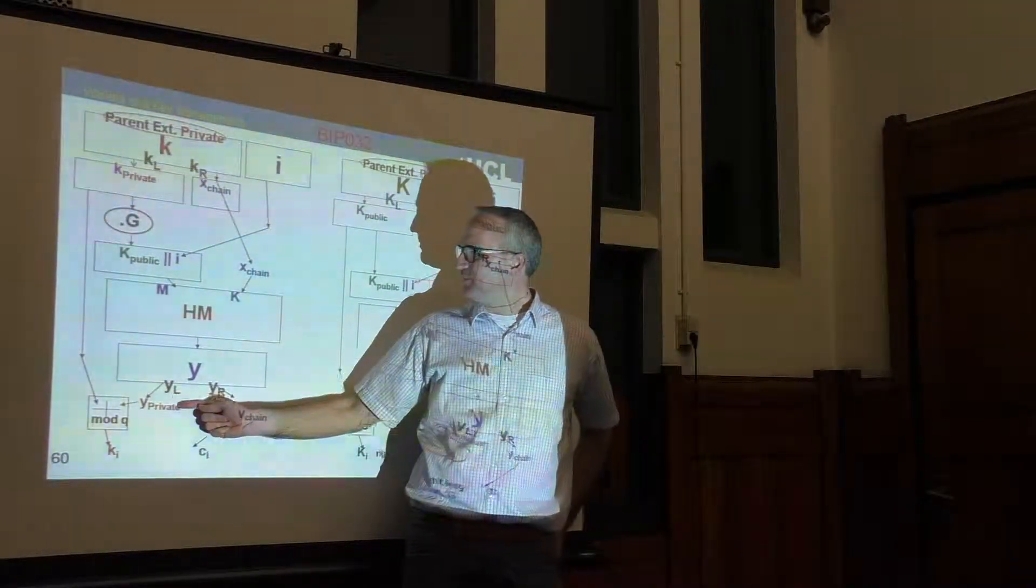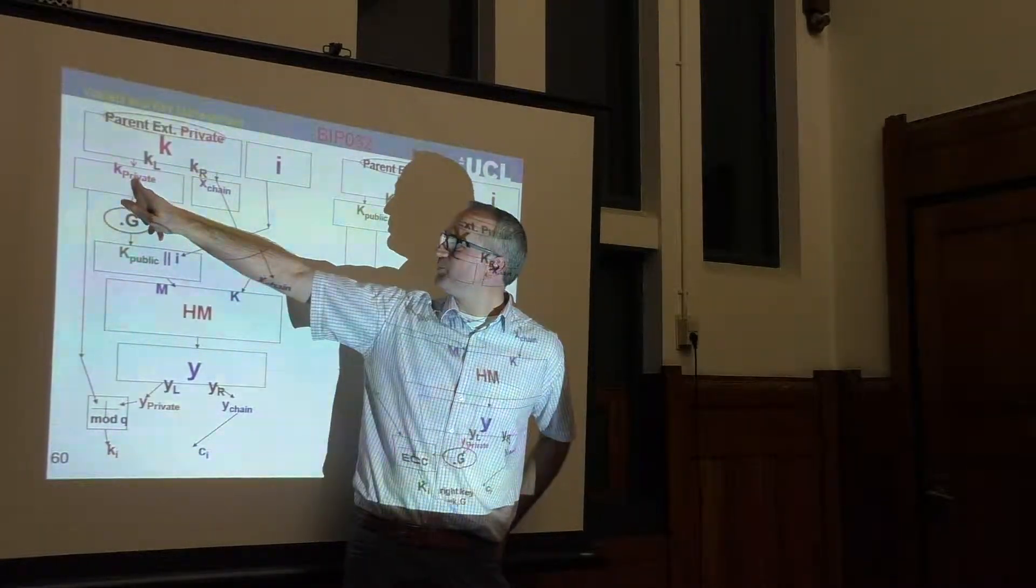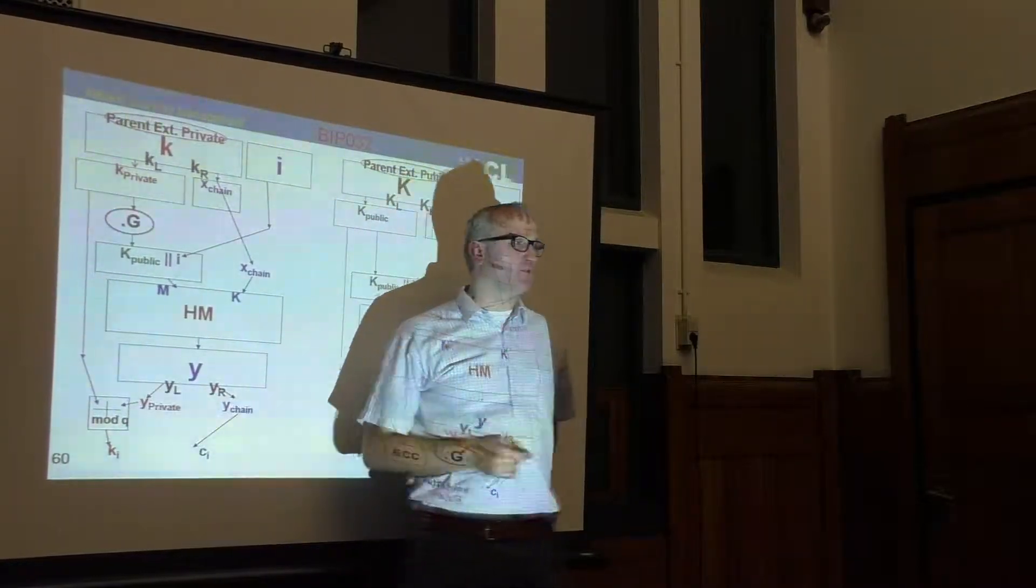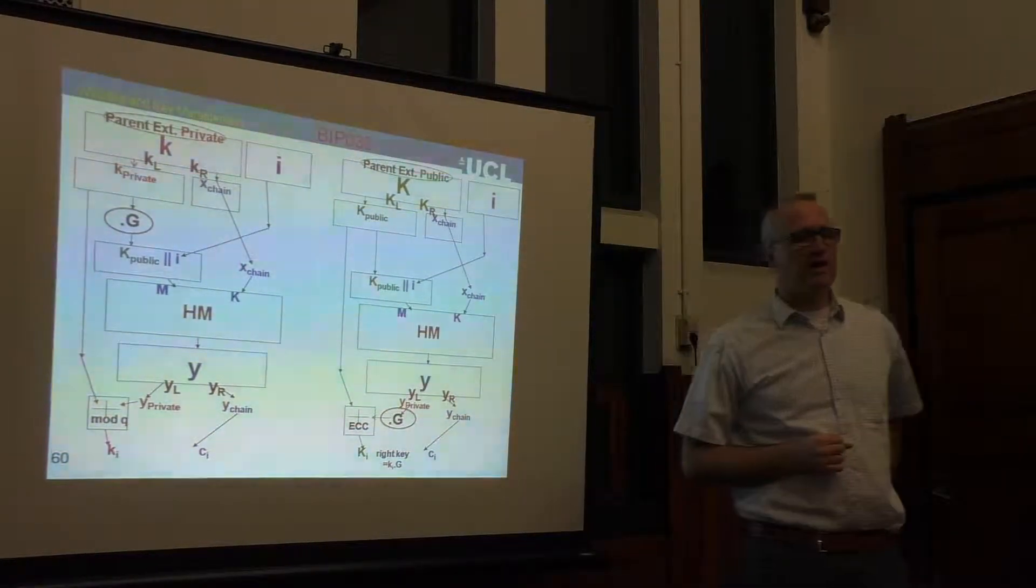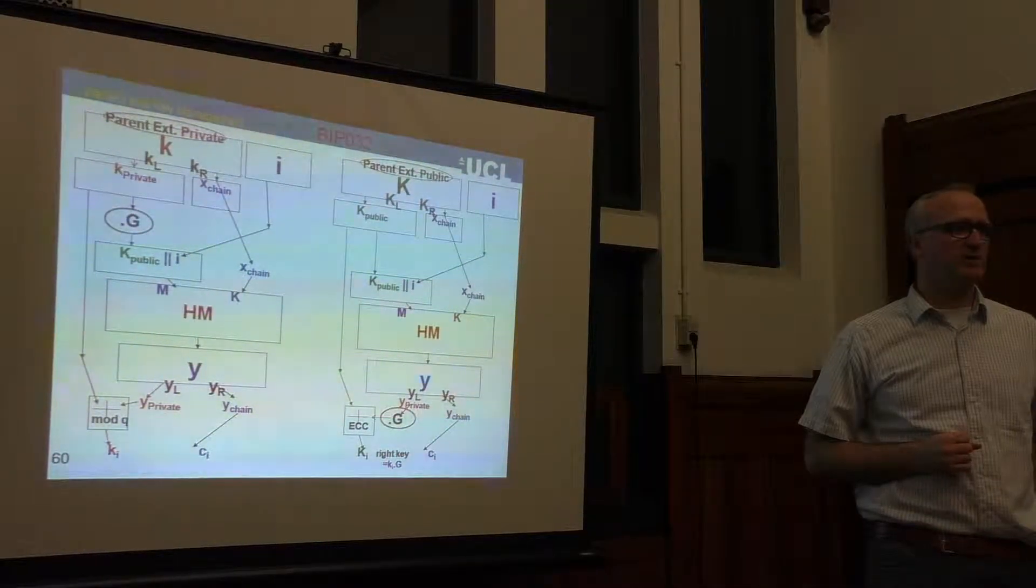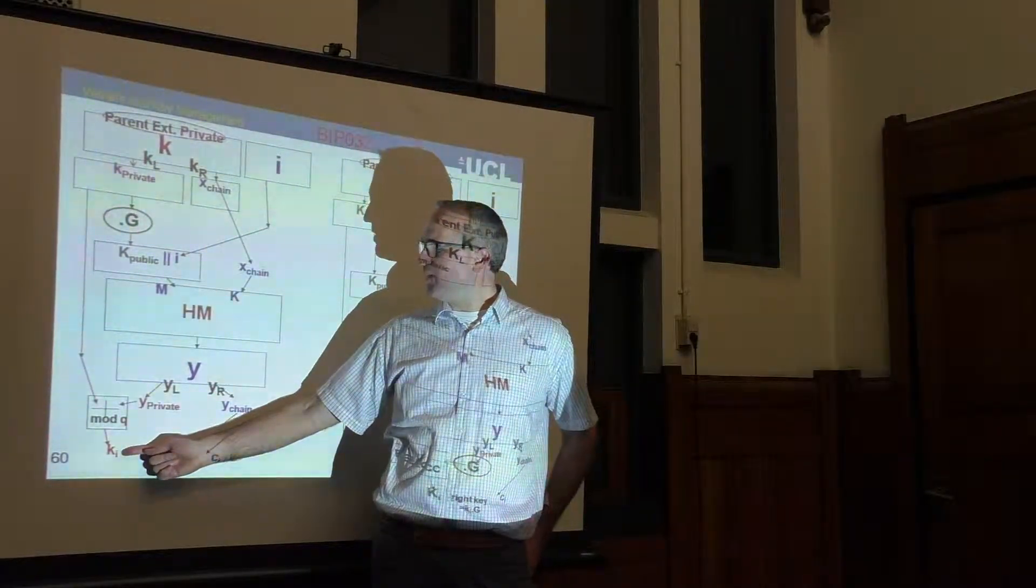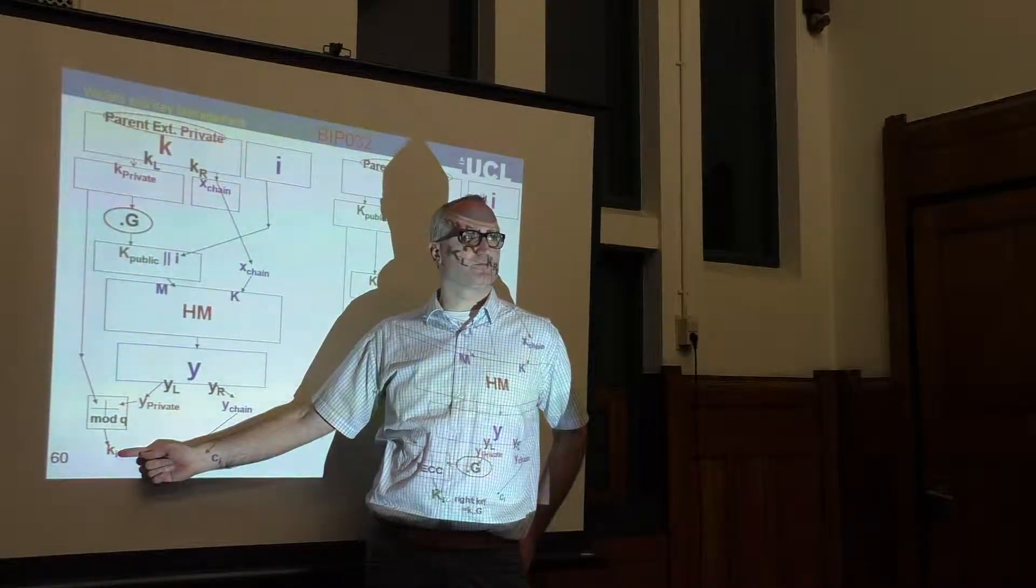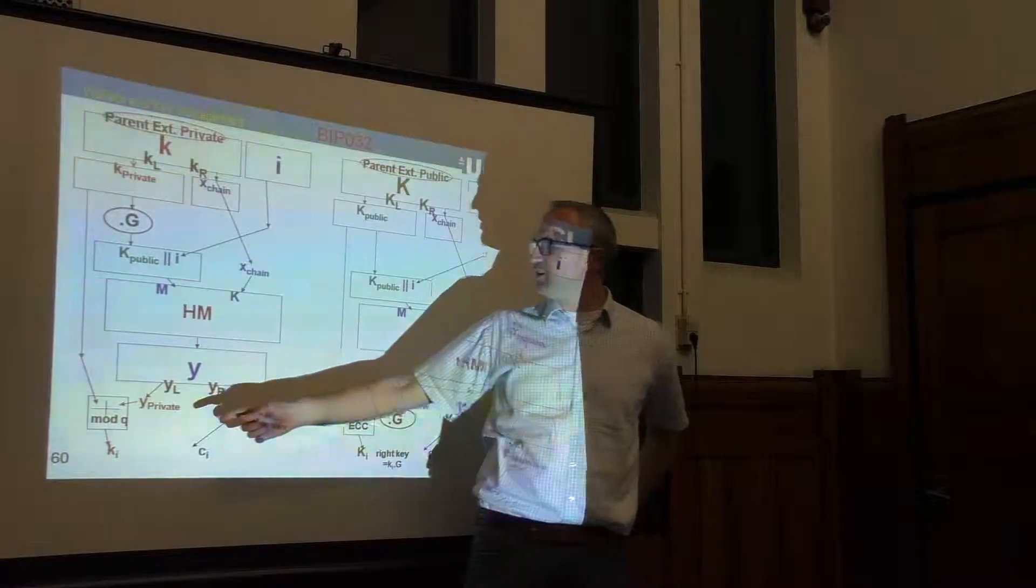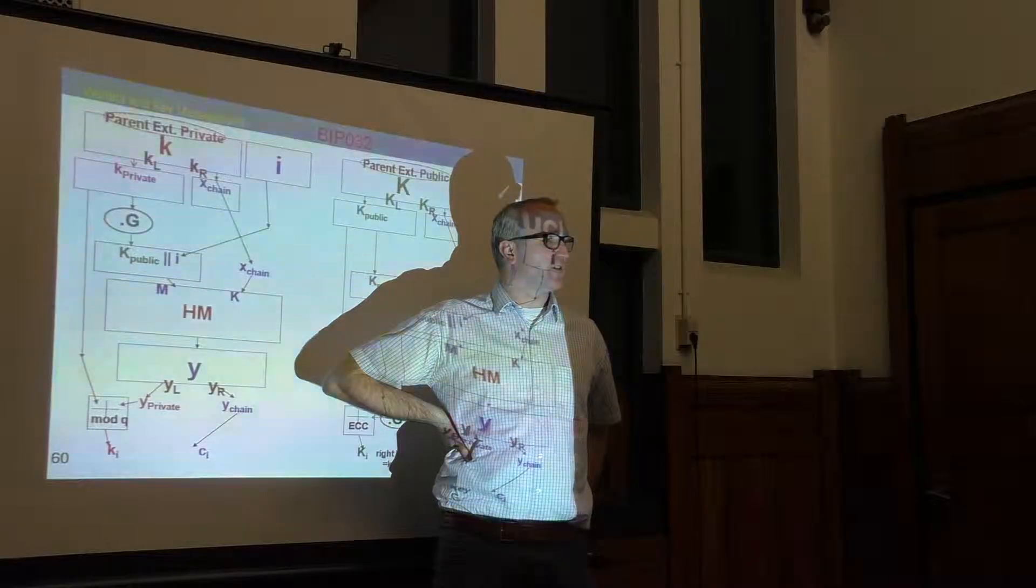The left-hand side is going to be combined with this K private by the addition modulo Q, where Q is the number of points on the Bitcoin elliptic curve. It's a large prime of 256 bits. At the end, you get another key which you call Ki, which is a sort of private key.